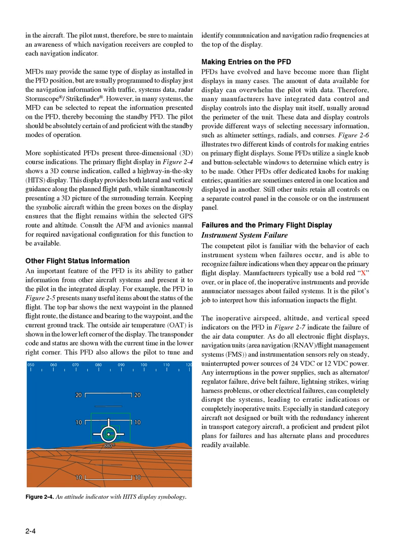The pilot should be absolutely certain of and proficient with the standby modes of operation. More sophisticated PFDs present three-dimensional, 3D, course indications. The primary flight display in Figure 2-4 shows a 3D course indication called a highway in the sky, HITS display. This display provides both lateral and vertical guidance along the planned flight path, while simultaneously presenting a 3D picture of the surrounding terrain. Keeping the symbolic aircraft within the green boxes on the display ensures that the flight remains within the selected GPS route and altitude.